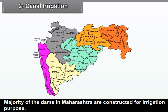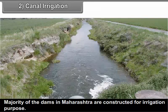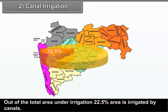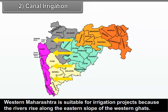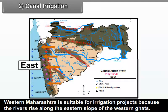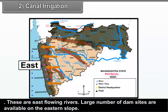Canal Irrigation: The majority of dams in Maharashtra are constructed for irrigation purposes. Out of the total area under irrigation, 22.5% area is irrigated by canals. Western Maharashtra is suitable for irrigation projects because the rivers rise along the eastern slope of the Western Ghats. These are east-flowing rivers and a large number of dam sites are available on the eastern slope.